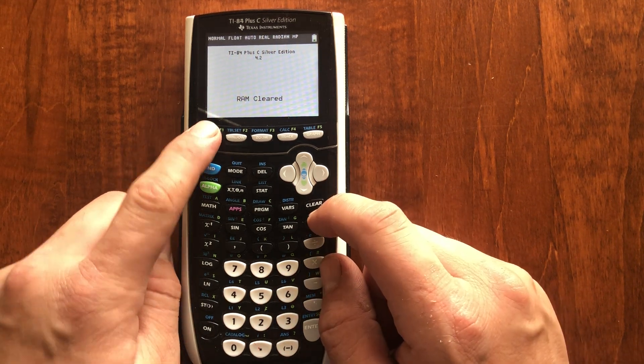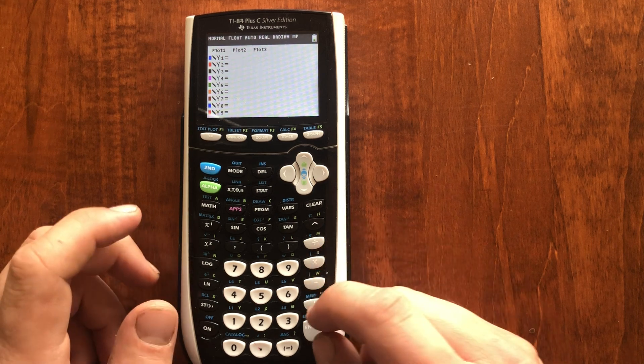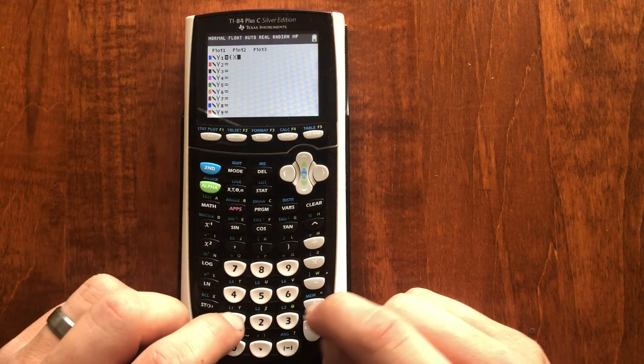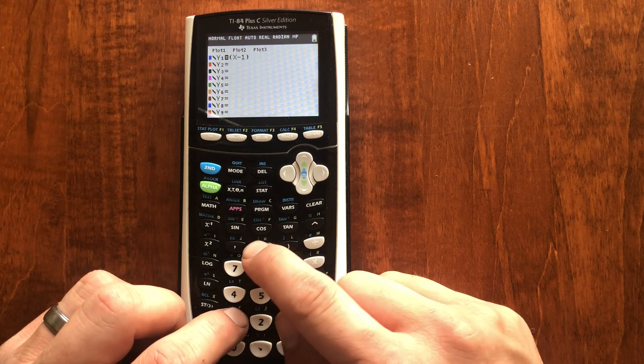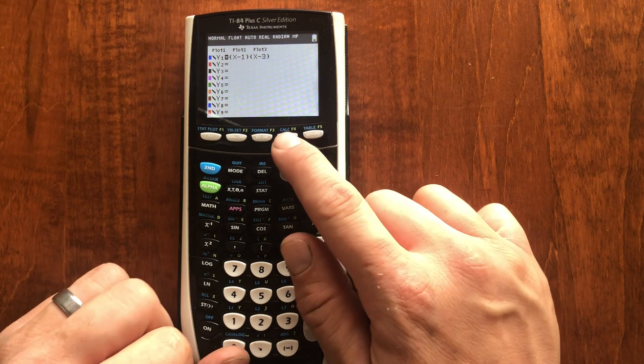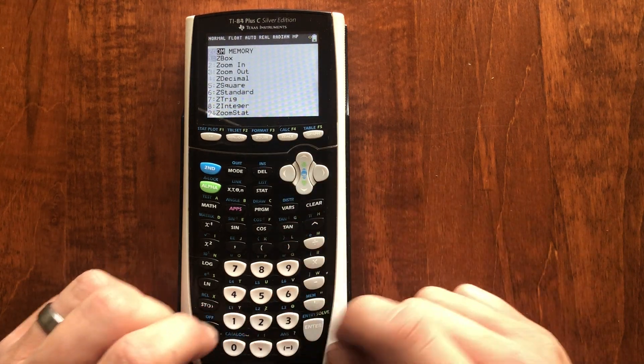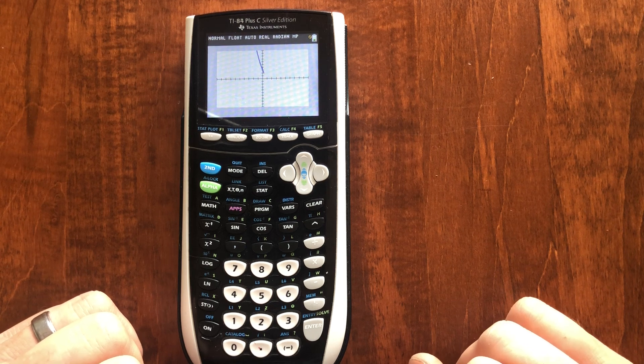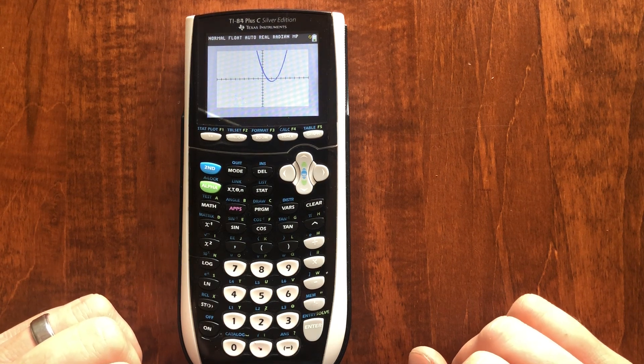First off, we'll need something to integrate. I'm going to press Y equals and I'll actually just graph a function. I'm going to graph a fairly simple parabola, one that I know the roots because it's in factored form. I'll make sure I'm in zoom standard, and huzzah, my parabola shows up. There it is, right there.